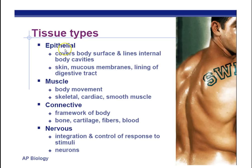Epi means 'on top of,' and epithelial tissues cover body surfaces — things like your skin, mucous membranes, and the lining of the digestive tract. Even your digestive system is exposed to the external environment when you eat food. The epithelium lines your intestines and prevents material from getting into other parts of your body — stuff should stay in your intestines.